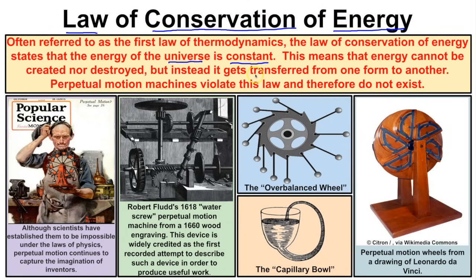If we go back about 15 billion years ago to the Big Bang and measure the amount of energy in that tiny golf ball-sized universe, it would be the exact same amount of energy as it is today, 15 billion years later. Because of this concept, the idea of perpetual motion machines just can't happen — they violate the law of conservation of energy.